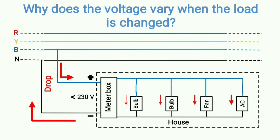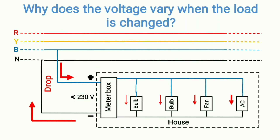The voltage variation always takes place because it completely depends on how consumers use their loads — sometimes two bulbs and a fan, sometimes just one bulb, sometimes all loads at once. Also, the same phase enters four or five other houses in the locality. So it completely depends on consumers, making this voltage always very fluctuating in nature. This is just a small demonstration — the drop is very high here, and that is why the voltage is reduced below 230 volts.